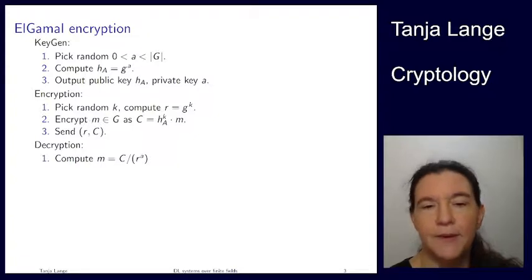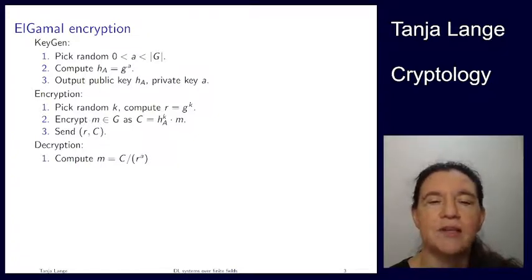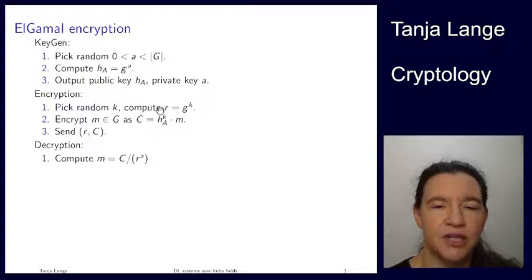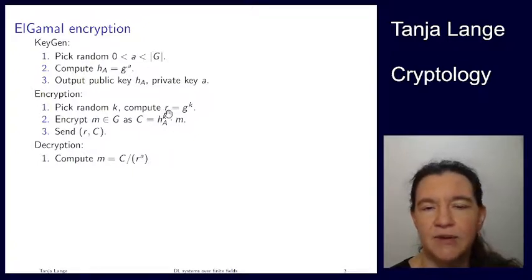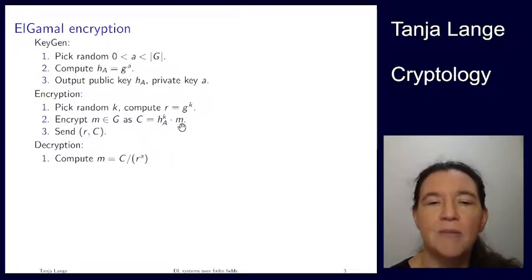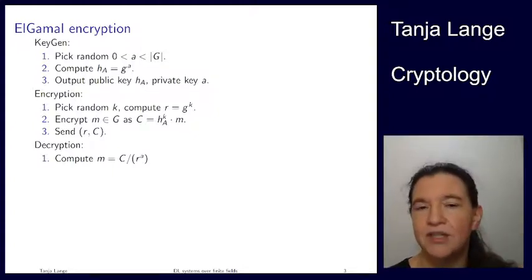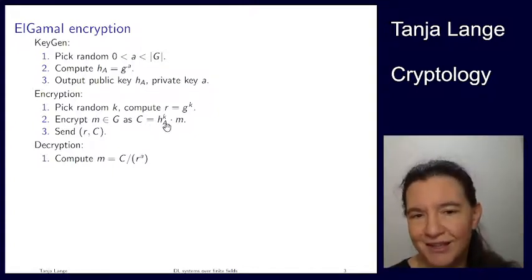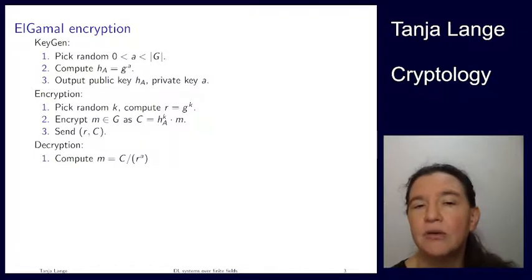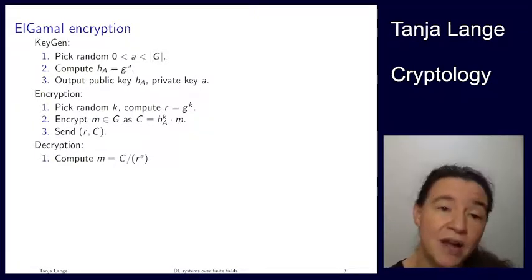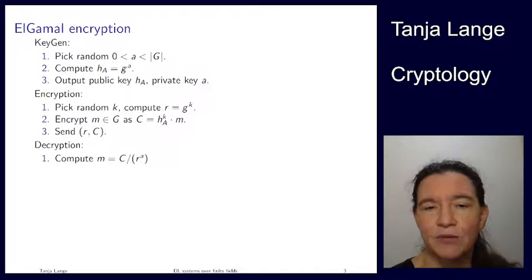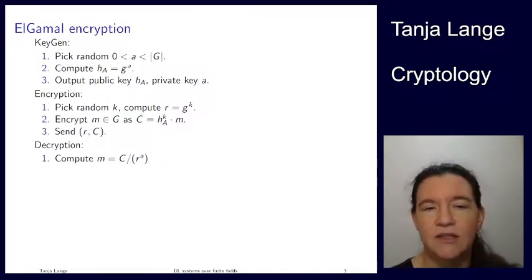In the ElGamal encryption system we have to assume the message is a group element, else this fails. If we assume this, Bob can compute the shared key — Alice's public key to the power K — and multiply it by M. Since the observer doesn't know Alice's private key or what K Bob chose, they can't figure out what the message is. Bob then sends R and C to Alice.